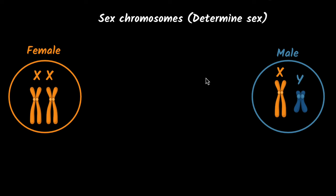So when a sperm fertilizes an egg, if the zygote has XX, it becomes a female. If the zygote has XY, it becomes a male.